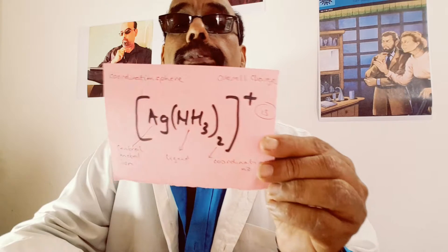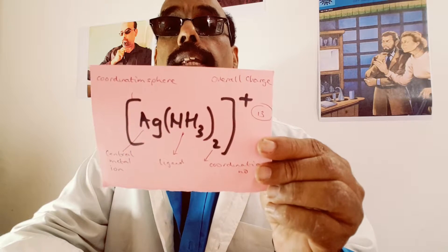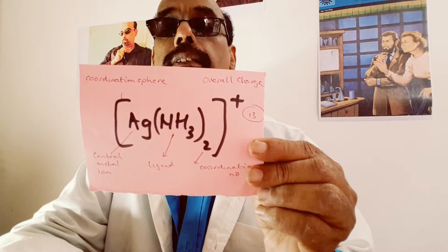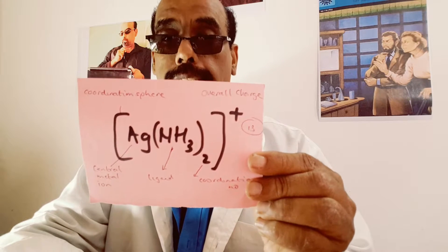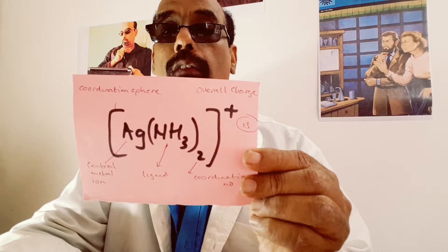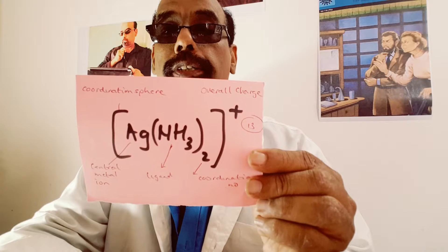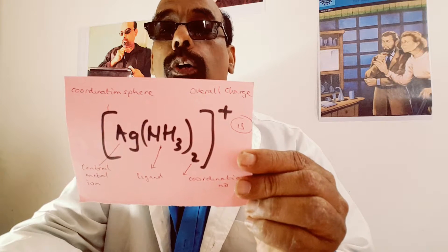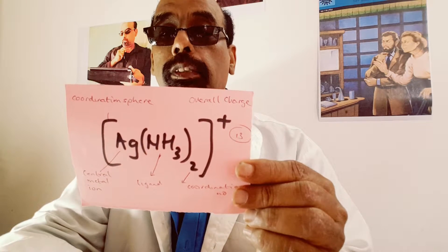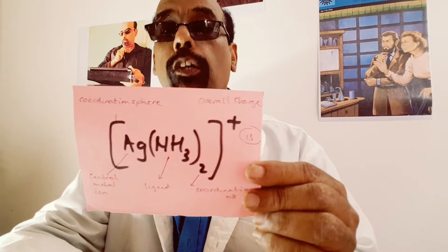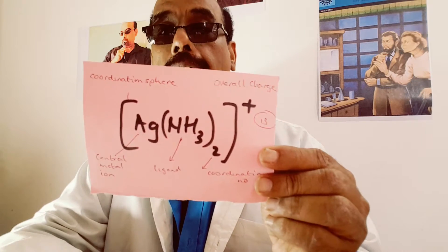This is a complex ion. Since it is positive, it is a complex cation. The Ag is the central metal ion. The NH₃ is the ligand. The two is the coordination number — the number of ammonia molecules bonded datively with the silver ion. The square brackets represent the coordination sphere. The overall charge is +1.